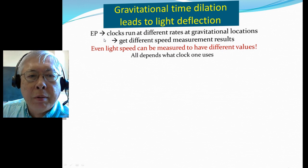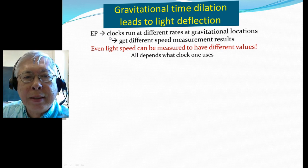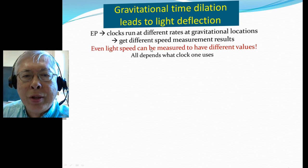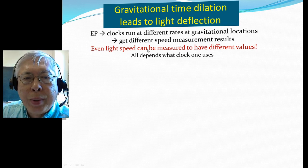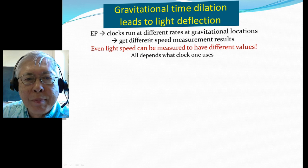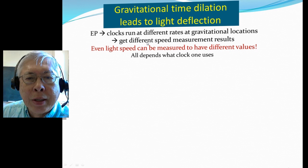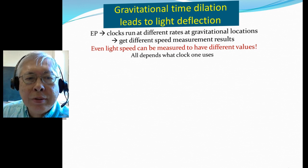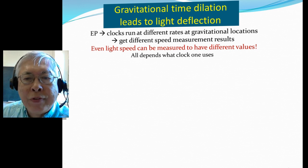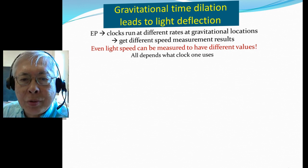The Equivalence Principle implies that clocks tick at different rates at different gravitational locations. Because speed is measured with time, you can get different speed measurements due to different clock rates. So even the speed of light can be measured to have different values — it all depends on what kind of clock you use.